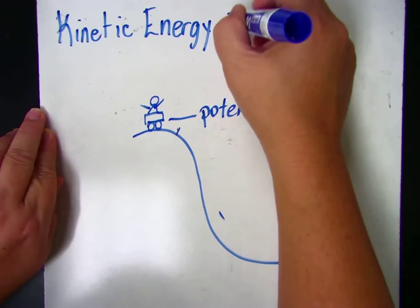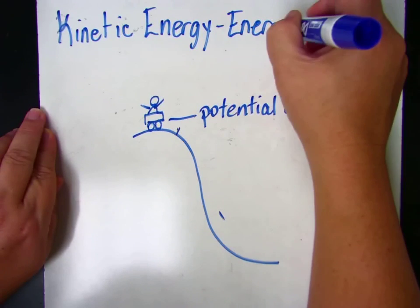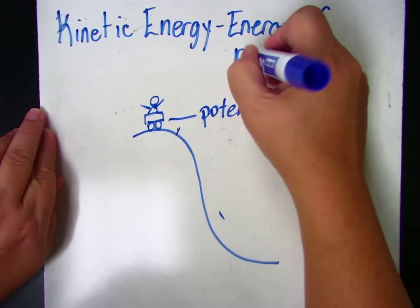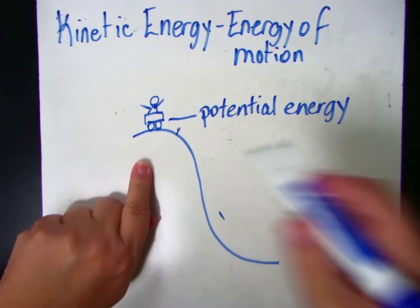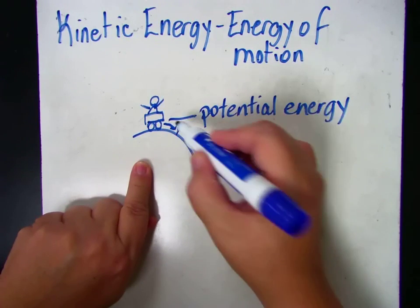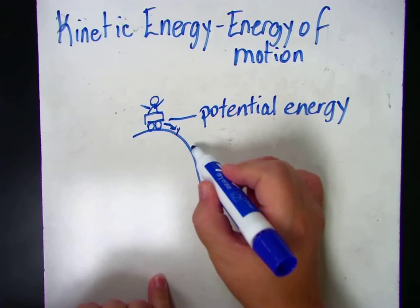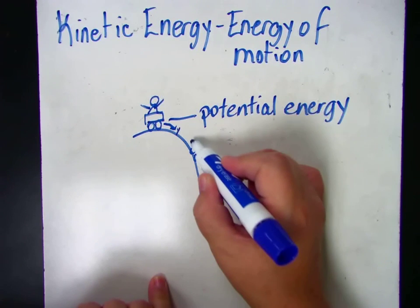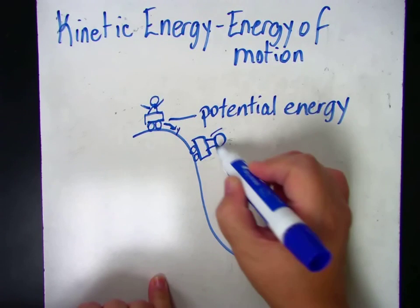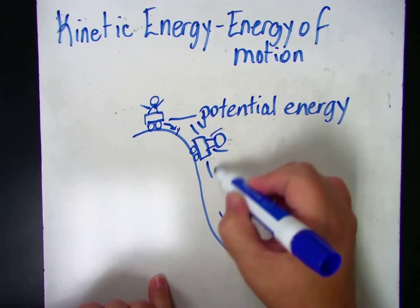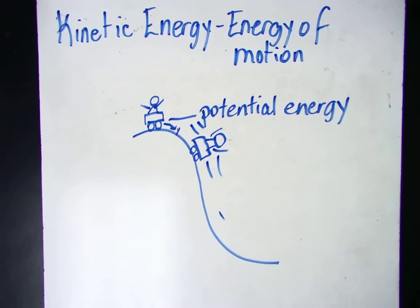Okay, so it's the energy of motion. Let's use our roller coaster rider here. Once the roller coaster rider gets to this point, they're actually moving very quickly down the roller coaster.